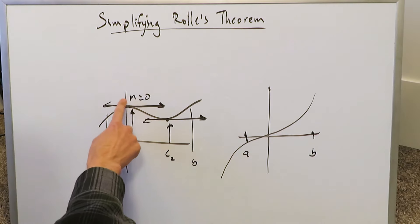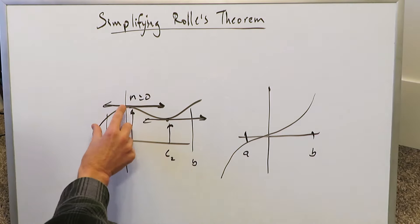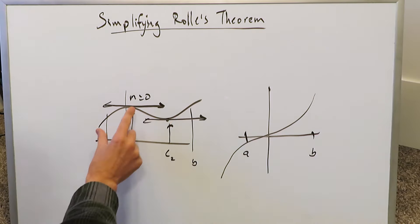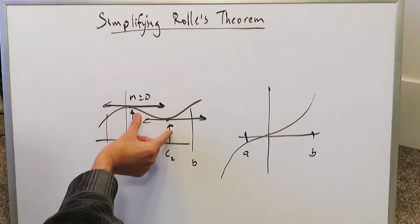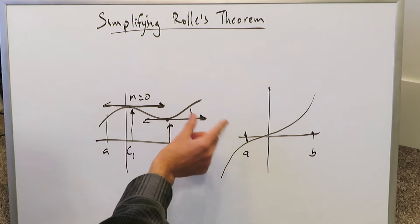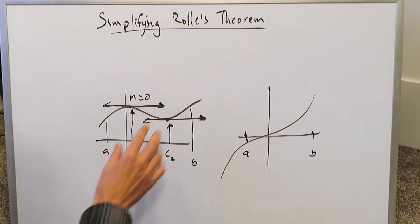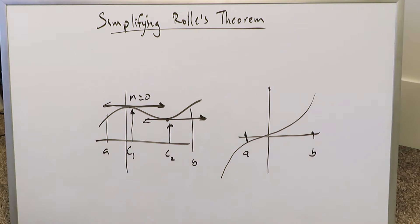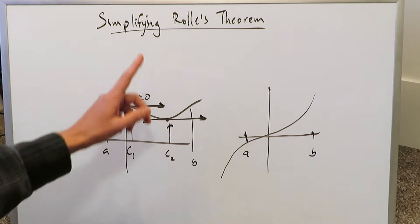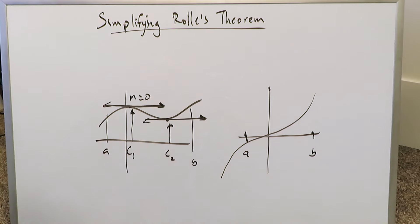Continuously increasing or continuously decreasing functions won't allow you to apply Rolle's Theorem. But functions with dynamic continuity — where portions are increasing and decreasing — have areas or points where you can demonstrate the verification of Rolle's Theorem.